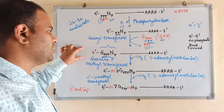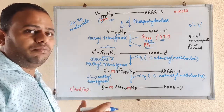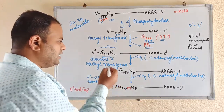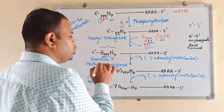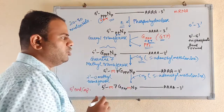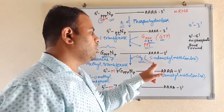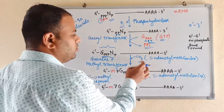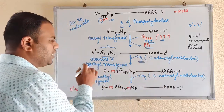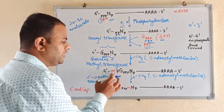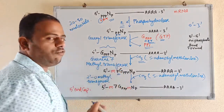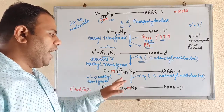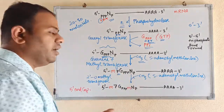Guanyl is a multi-ring structure having a hexameric ring and a pentameric ring attached together. At the seventh position there is a nitrogen, and at this seventh position a methyl group is attached. This methyl group is donated by S-adenosylmethionine, and using the enzyme guanyl-7-methyl transferase, this methyl group is added at the seventh position nitrogen of guanyl. Once the methyl group is attached at the seventh position, it protects the guanyl residue and also protects the 5 prime end in an enhanced manner.